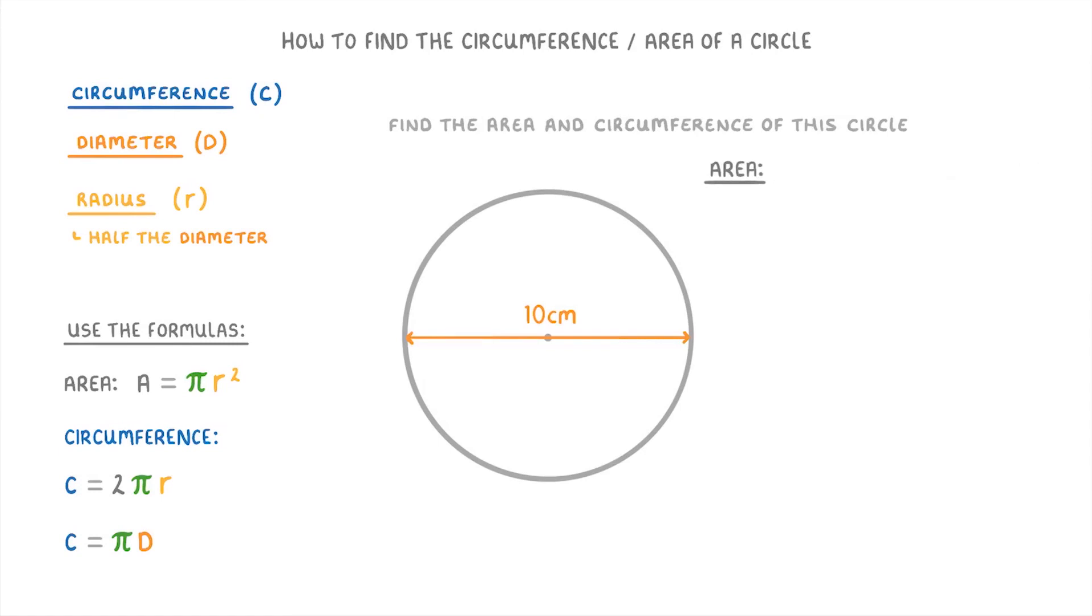So if we want to find the area, which is pi r squared, we're going to have to work out the radius first. Which means that we're going to have to take the diameter of 10 centimeters, and divide it by 2 to get a radius of 5 centimeters. Because the radius is half the diameter. Then we just plug that into the formula, and do area equals pi times 5 squared. Which is 78.5 square centimeters.